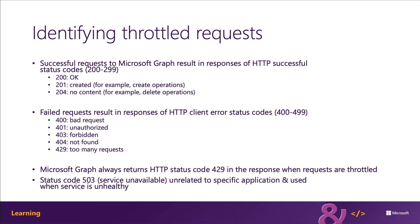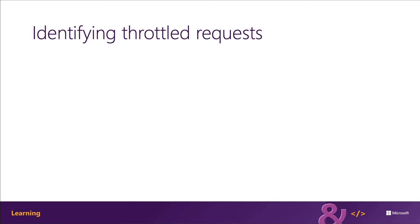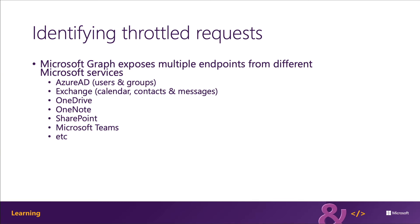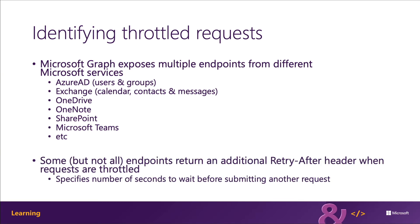Many, but not all, of these endpoints will also return an additional value in the response's HTTP headers that the requester can use to determine how long they should wait before submitting another request. The retry-after header value is an integer representing the number of seconds the client should wait before submitting the request again. Any requests sent before this time will continue to be throttled and may cause the retry-after value to increase.